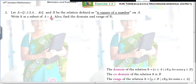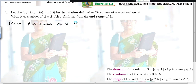First, find the elements under the given condition. What is the condition? R is defined as: E is the square of a number on A. So, 1 is an element of A. We find 1 squared, because it is a square relation. 1 squared is equal to 1.